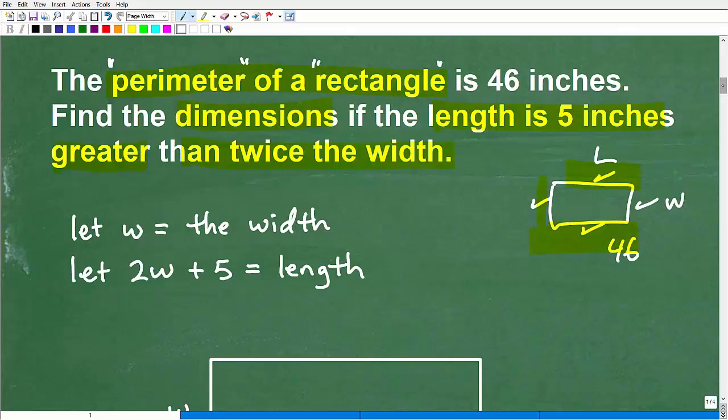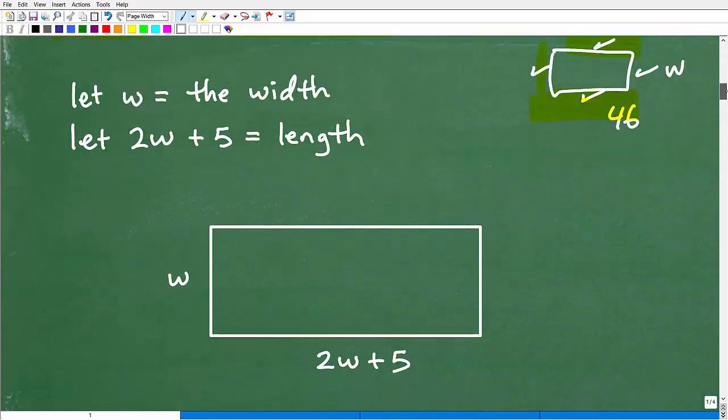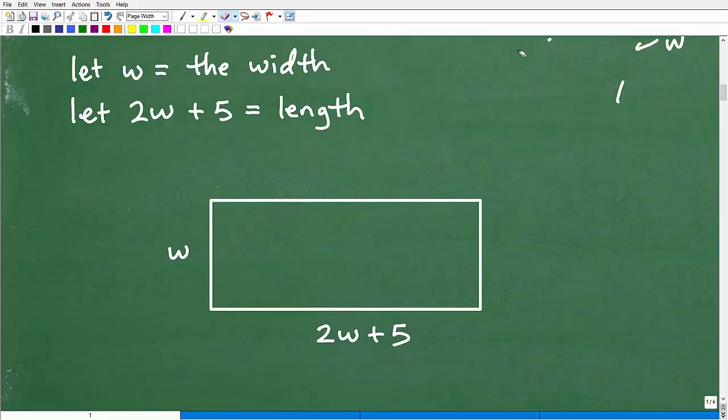Now we have to think about variables. Let's draw a sketch. Here is a nice, lovely rectangle. We have our width and we have our length. Let's call the width W. When you're in algebra, always use variables that kind of make sense. I'm not going to call this G or X. It's nice to use a variable that represents the word. So let's use W as our variable for width.